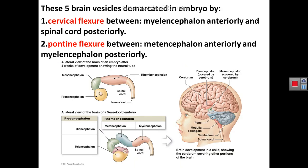In embryo, particularly in your lab when examining slides of chick, rat, or mouse embryo, you may find angles or constrictions that help demarcate these five secondary brain vesicles. These angles are only important in embryo. One is called the cervical flexure, between the myelencephalon anteriorly and the spinal cord. The next is the pontine flexure, between the metencephalon and myelencephalon.